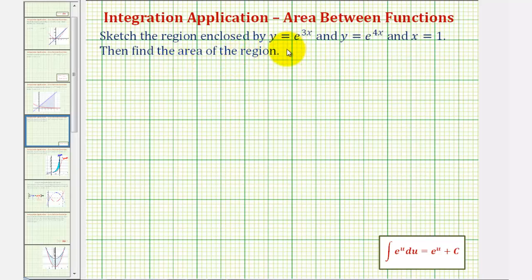We want to sketch the region enclosed by y equals e raised to the power of 3x and y equals e raised to the power of 4x and x equals 1. Then we want to find the area of the region.